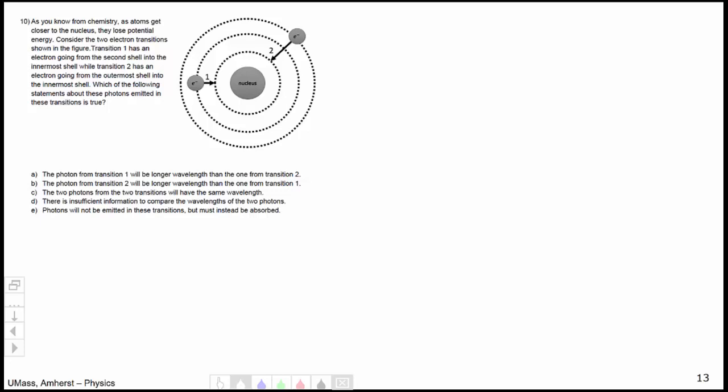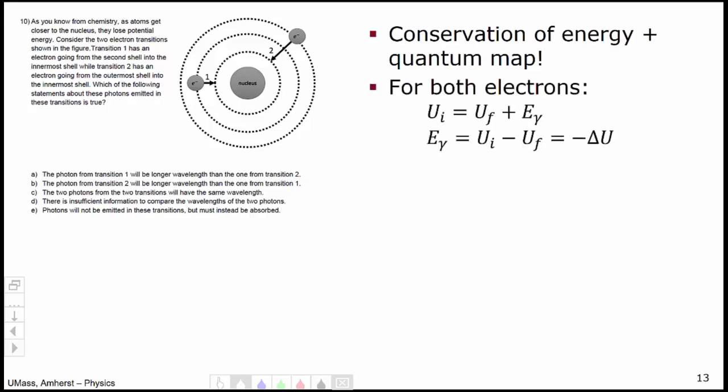Question 10 dealt with atomic transitions, and this was yet again conservation of energy and moving around the quantum map. For both electrons, we have an initial potential energy and a final potential energy, where the final potential energy was less than the initial. Both were negative, but the final potential energy was more negative. In the process of going from the initial state to the final state and losing some energy, that energy went into the photon. In particular, the photon's energy would be ui minus uf or minus delta u, which, given that ui and uf were both negative, would give you a positive photon energy.